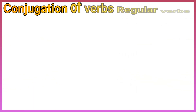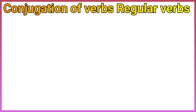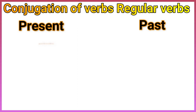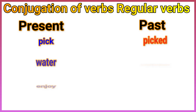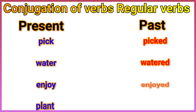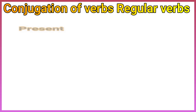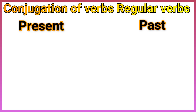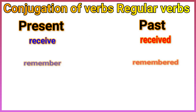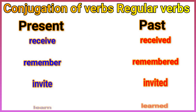Conjugation of verbs. Regular verbs — present and past: pick / picked, water / watered, enjoy / enjoyed, plant / planted, receive / received, remember / remembered, invite / invited, learn / learned.